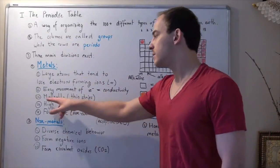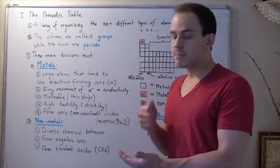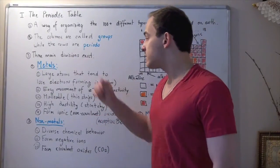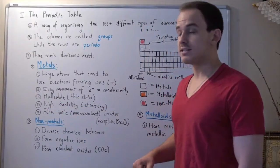So metals generally have high conductivity rates. Now, metals are also malleable, which means you can hammer them into very thin strips. Examples include wires. Now, metals are also, or have, high ductility rates.